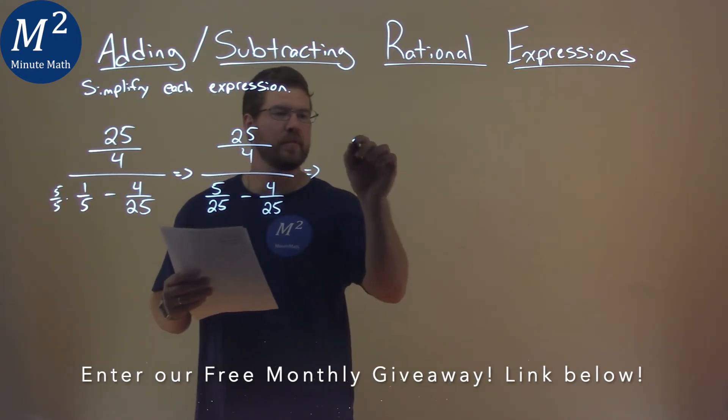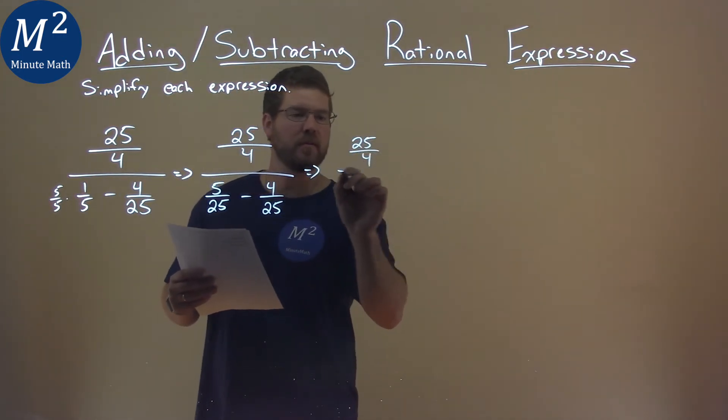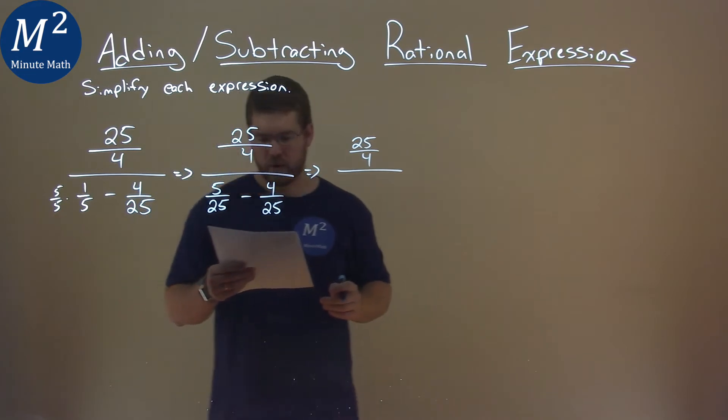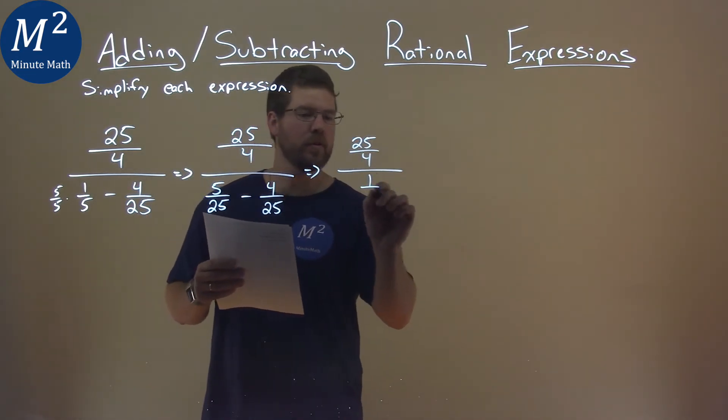So we can simplify that a little bit. You have 25 over 4—it stays here—and then 5 over 25 minus 4 over 25 is 1 over 25.